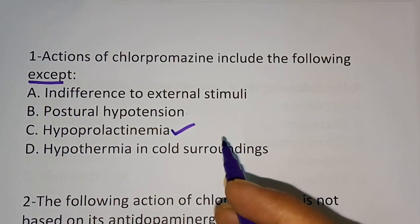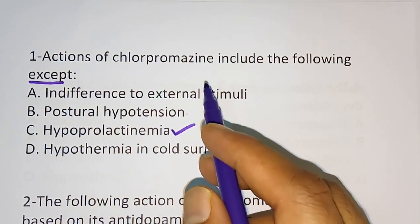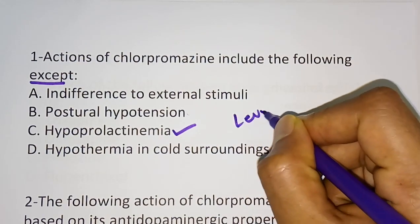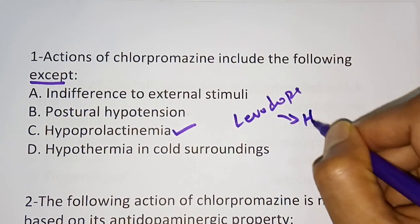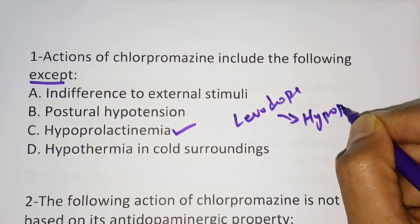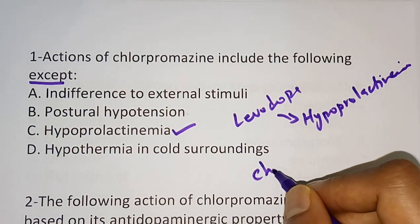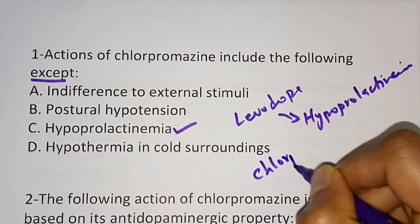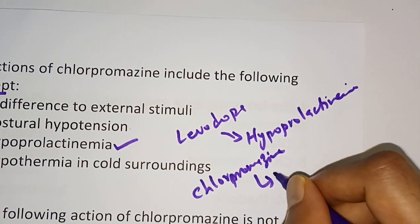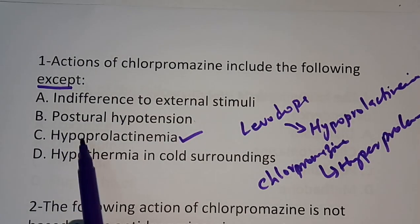Chlorpromazine will actually increase the secretion of prolactin — it causes hyperprolactinemia. We studied in the last video that levodopa will inhibit the prolactin release, so it causes hypoprolactinemia. While chlorpromazine, or neuroleptics in general, cause hyperprolactinemia. Since the question was 'except', the correct answer is hypoprolactinemia.